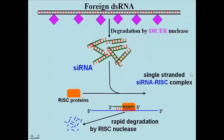The single-stranded RNA in the RISC can H-bond to one strand of the foreign double-stranded RNA and catalyze its rapid hydrolysis. The hydrolytic activity is a property of one of the RISC proteins.